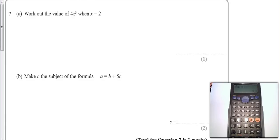Okay, work out the value 4x cubed when x equals 2. Well, there's a really important point here that we know that x cubed is 2 cubed, which when you calculate it gives us 8. So therefore, 4x cubed is going to equal 32.